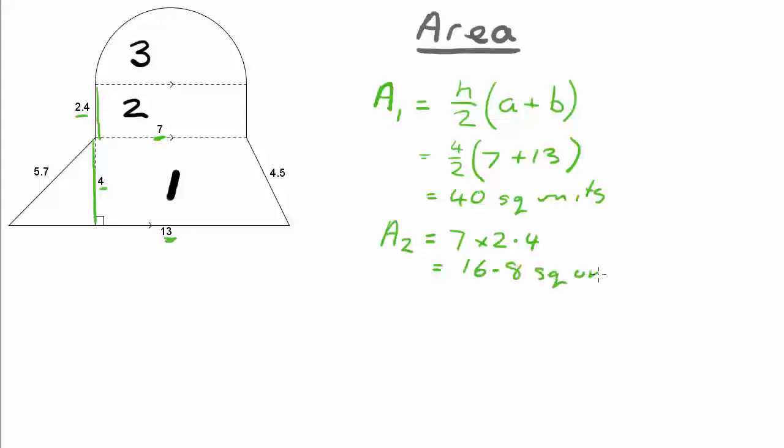The third area is a little more complicated. Our third area is a semicircle. A semicircle is half of a circle, and a full circle is given by pi r squared.